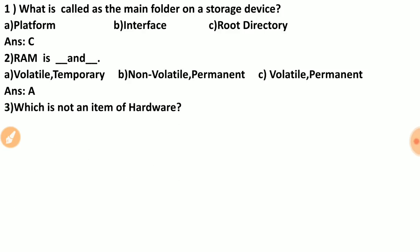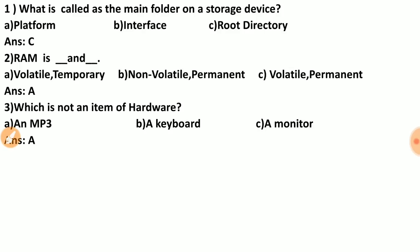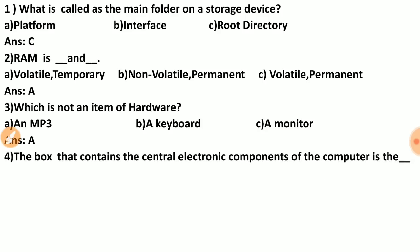Question three: which is not an item of hardware? Options are: MP3, keyboard, monitor. Hardware refers to parts you can physically touch. You can touch a keyboard and a monitor, but MP3 is a software part — so the correct answer is A, MP3.